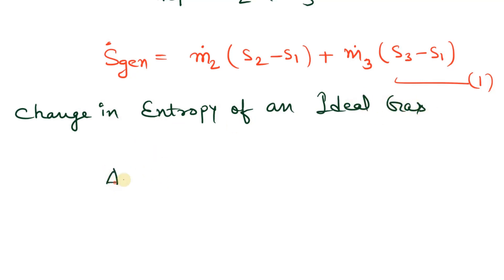Delta S equals Cp ln(T_f/T_i) minus R ln(P_f/P_i), where T_f is final temperature, T_i is initial temperature, P_f is final pressure, and P_i is initial pressure.